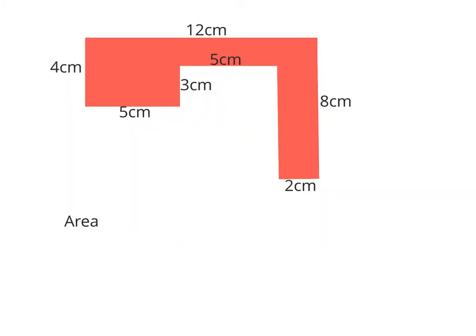In this example we have an even more challenging shape. We're going to divide it up into three separate areas to get the overall area of the shape. Making separations, we've got three clear separate areas: one, two, and three. Area one is a rectangle measuring 5 by 4, so area one is 5 times 4 giving 20 centimeters squared.